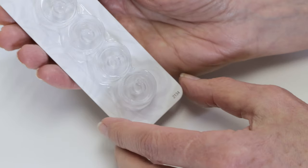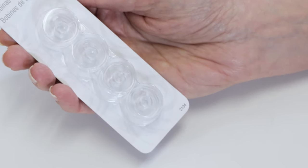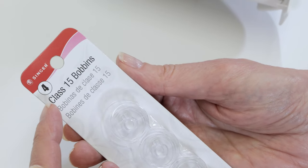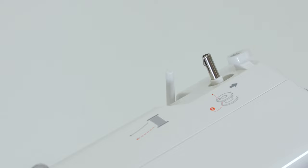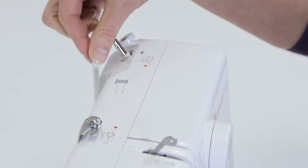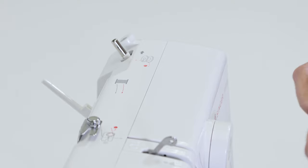These are Singer Class 15 transparent bobbins, so when you want to purchase additional bobbins for your machine, make sure they're Singer Class 15 transparent bobbins. To wind a bobbin, we're going to follow the red dashed threading path that's marked on the top of your machine. First, tilt the spool pin back.